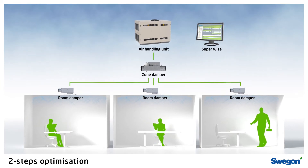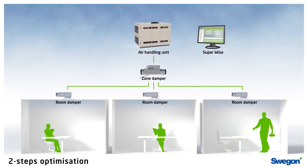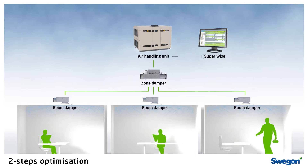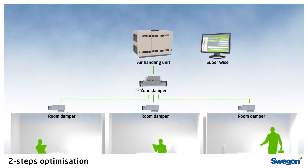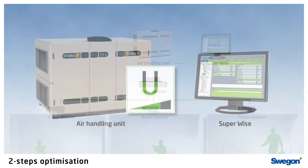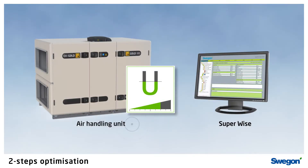Two-step optimization is used to minimize pressure drop throughout the ventilation system, which means that Superwise adjusts the air handling unit's pressure set point based on the dampers in the rooms and in the zones.